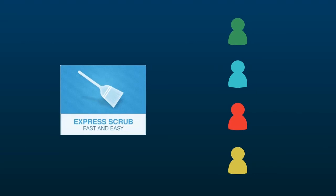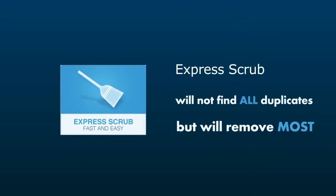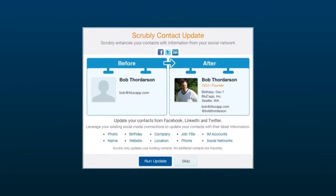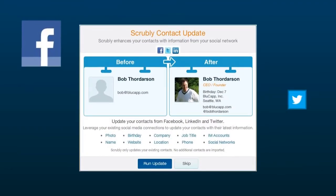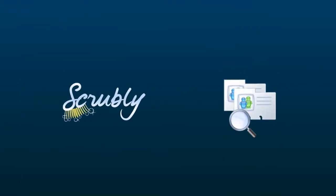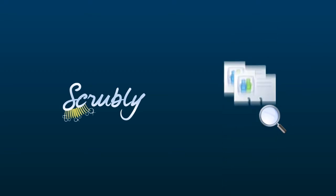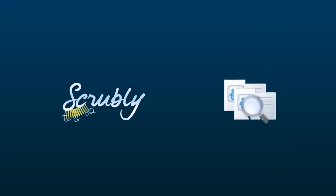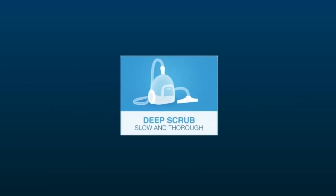Note that Express Scrub will not find all duplicates, but it will remove most, and also give you the option of updating your contacts with social media contact data from your friends on Facebook, Twitter, and LinkedIn. If you want to have Scrubly quickly analyze and remove duplicates without a lot of extra effort on your part, this is the option for you. If you go with Express Scrub now, you can always re-scrub your uploaded contacts again later and run Deep Scrub.